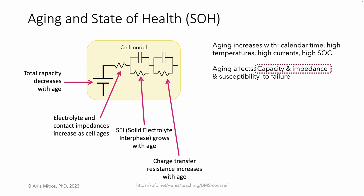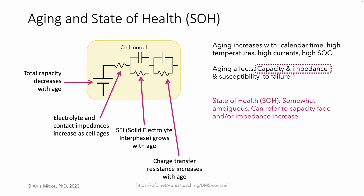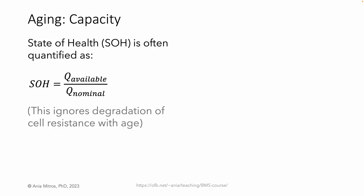To boil down the key ideas: aging is evidenced by decreased capacity and increased cell impedance. The term state of health, or SOH, doesn't have a single consistent definition. I've heard it used quantitatively to refer to capacity fade and qualitatively to refer to impedance increase. A common equation for state of health ignores cell impedance and is simply the present capacity divided by the nominal capacity.